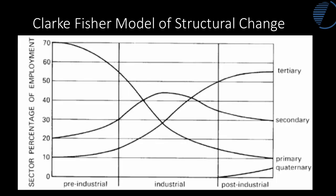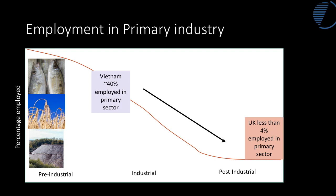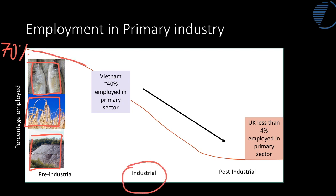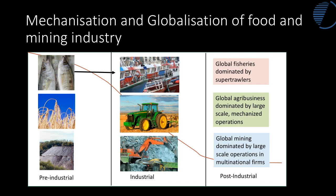Let's start with employment in primary industries. Primary industries are those involved in the exploitation of the earth's raw materials — fisheries from the oceans, agriculture, and mining. Before industrialisation starts, around 70-80% of the population is involved in these activities. However, as the industrial stage proceeds, the number of people employed in primary industries rapidly declines to almost nothing. Today only 4% of our population are employed in the primary sector, while in LIDCs like Vietnam, around 40% are still employed there.